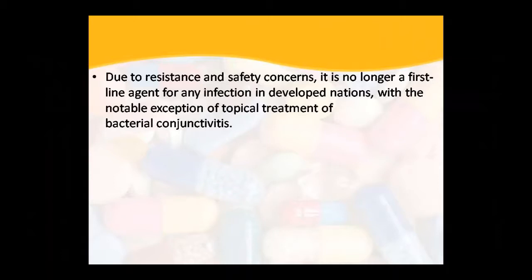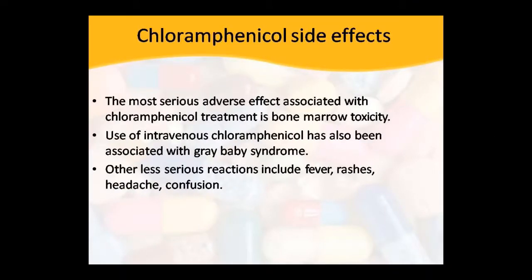Chloramphenicol is best used topically, for example in bacterial conjunctivitis. Side effects include bone marrow toxicity. Given intravenously, it can cause grey baby syndrome — this is an important topic. If chloramphenicol is given to a newborn, the baby's body turns grey. This is an important side effect of chloramphenicol. There can also be less serious reactions including confusion.